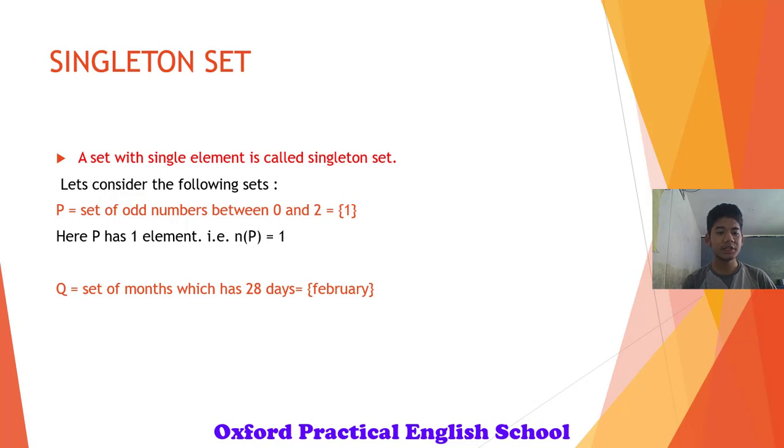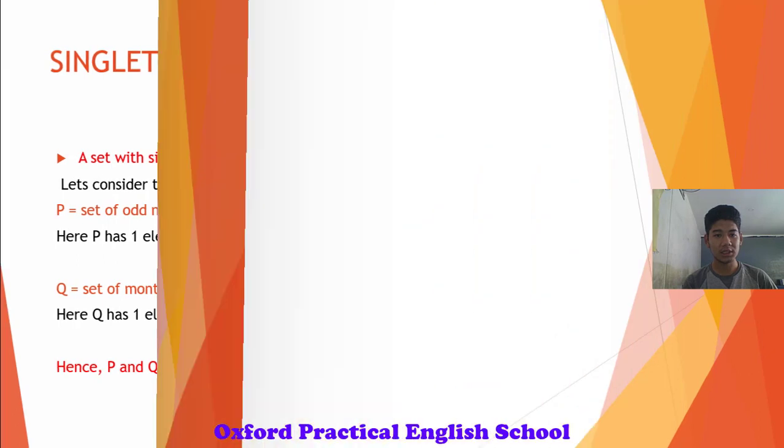Q, set of months which has 28 days. The only month which has 28 days is February. Since Q has only one element, Q is also a singleton set. Both Q and P are singleton sets.